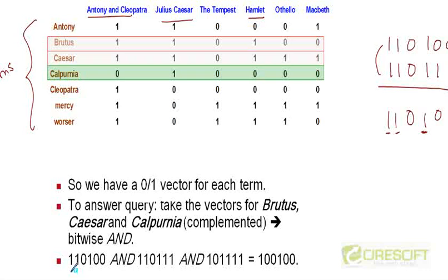So if we do that, if we take the AND of 1 1 0 1 0 0 and 1 1 0 1 1 1, basically these were these two vectors.